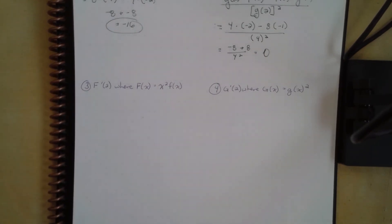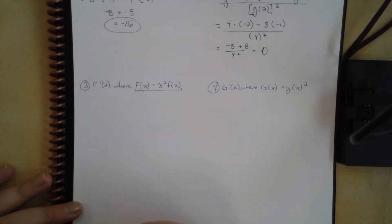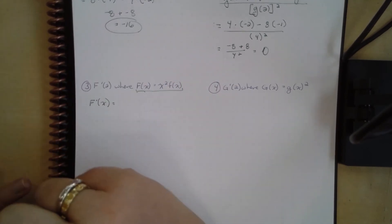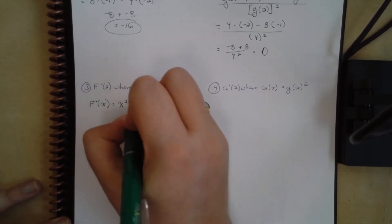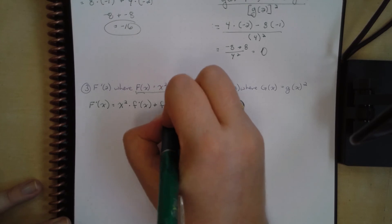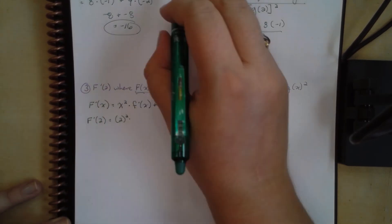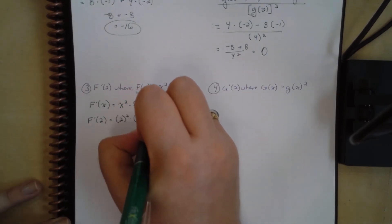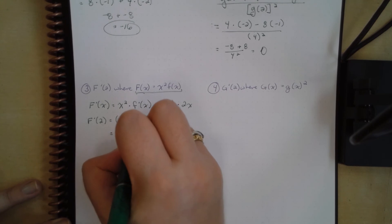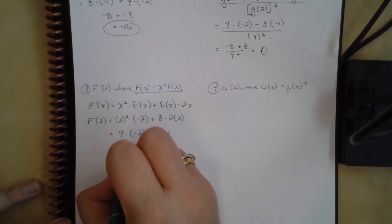We want to find capital F prime(2), where F(x) equals x squared times f(x). Using the product rule, F prime(x) equals x squared times f prime(x) plus f(x) times 2x. So F prime(2) equals 2 squared times f prime(2), which is negative 2, plus f(2), which is 8, times 2 times 2. That gives 4 times negative 2 plus 8 times 4, which is negative 8 plus 32, equals 24.